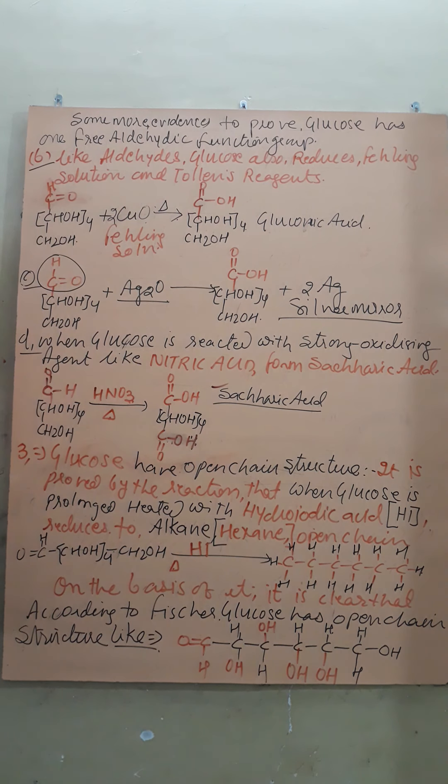Again we have one more reaction. When glucose is reacted with nitric acid and heated, you know that nitric acid is a strong oxidizing agent. It can oxidize aldehydes and primary alcohols into carboxylic acid.